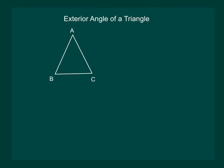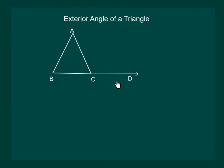Draw out angle ABC and produce one of its sides, say BC, such that it forms a ray CD. Now observe the angle ACD. Angle ACD lies in the exterior of triangle ABC, and hence we call it the exterior angle of triangle ABC formed at the vertex C.